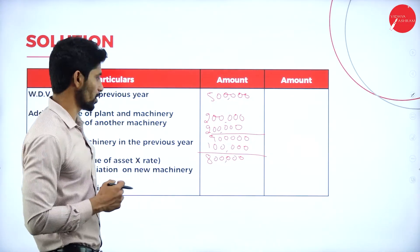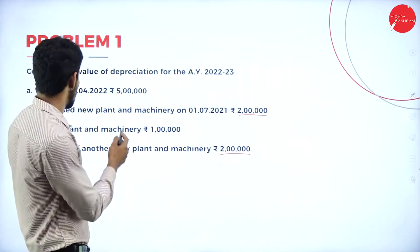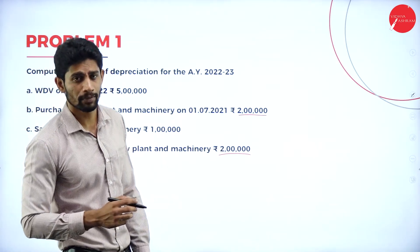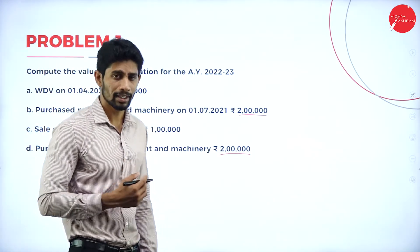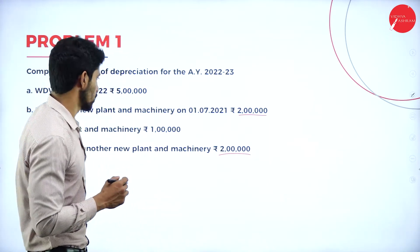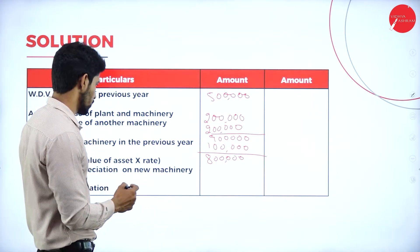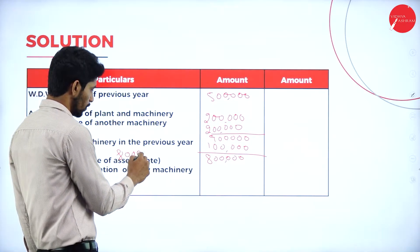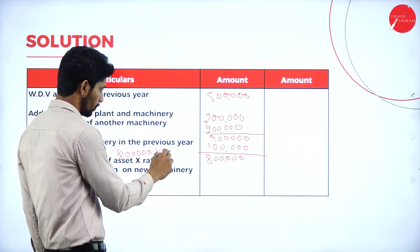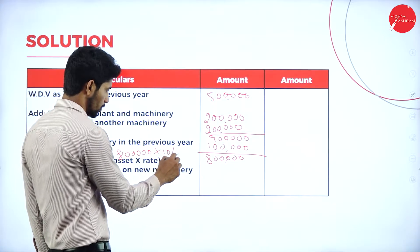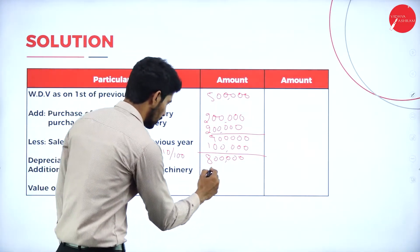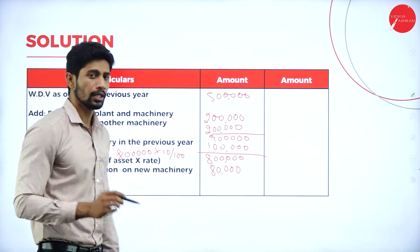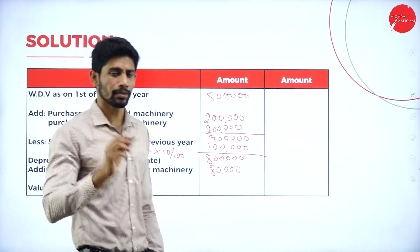The rate of depreciation is not given in this problem. What is the rate of depreciation applicable on plant and machinery? Normally it is 10%. So calculate 10% on 8 lakh rupees. You will get 80,000. And here you also have to give the additional depreciation.